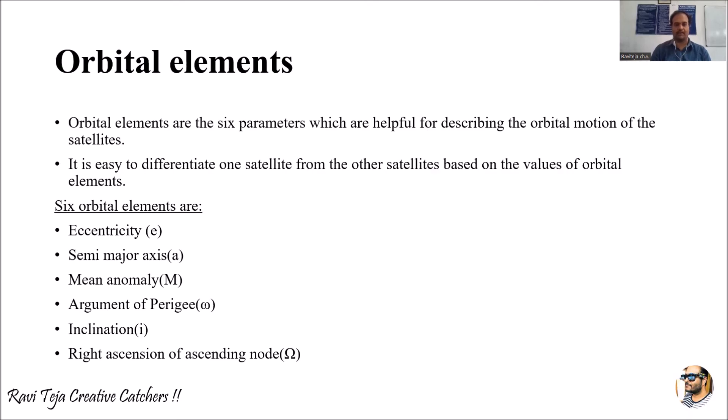The six orbital elements are: eccentricity (e), semi-major axis (a), mean anomaly (M), argument of perigee (ω), inclination (i), and right ascension of ascending node (Ω). We have descension node as well as ascending node.